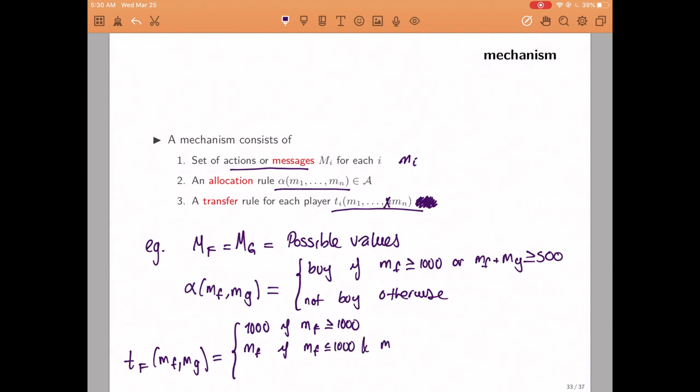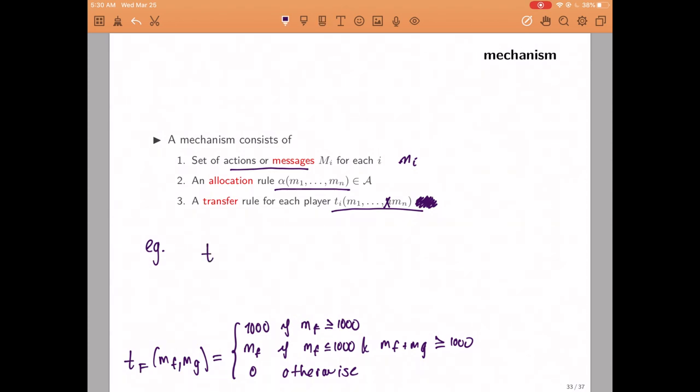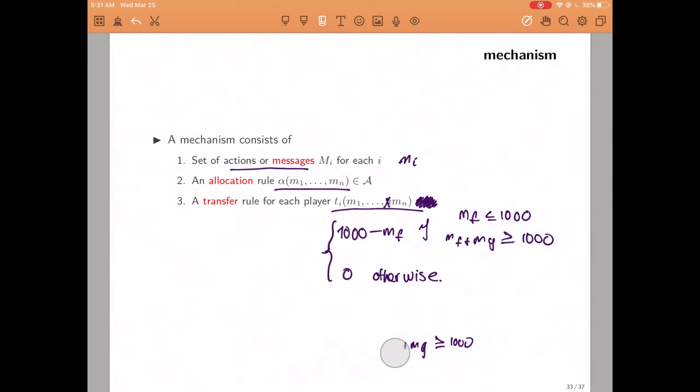As for the transfer rule, if Gary told us that she valued the machine more than 1000, then she would pay for it. If she didn't, but the sum of the two values was greater than 1000, then Frankie would pay her own report and Gary would pay the rest. So this also tells us what Gary's transfer rule has to be. Gary would pay 1000 minus Frankie's report when Frankie's report is less than 1000 but the machine is being bought, and Gary would pay zero otherwise. This is just the same mechanism we studied last time, but now we can express it using the language that we have proposed today.